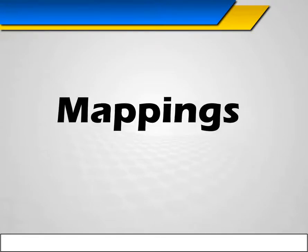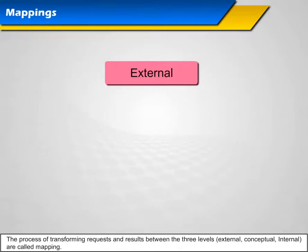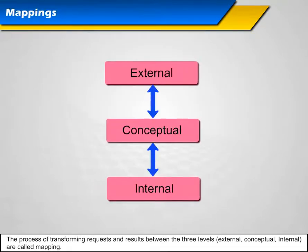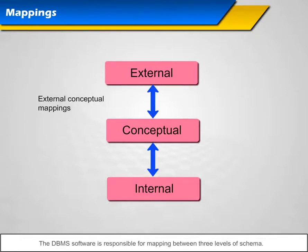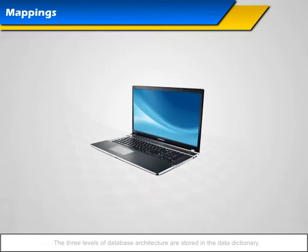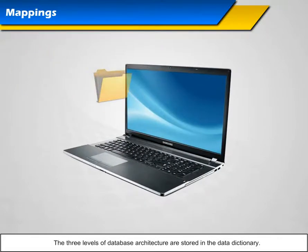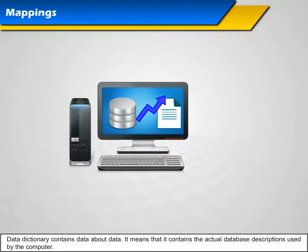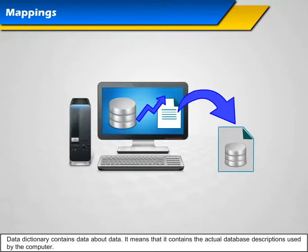Mappings: The process of transforming requests and results between the three levels — external, conceptual, and internal — is called mapping. The DBMS software is responsible for mapping between the three levels of schema.